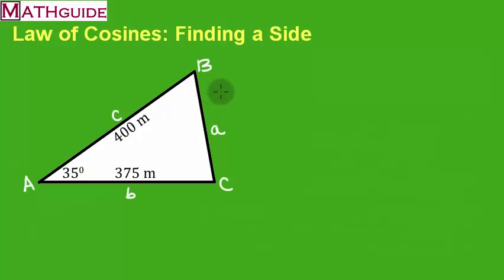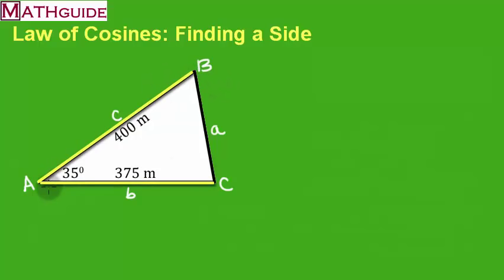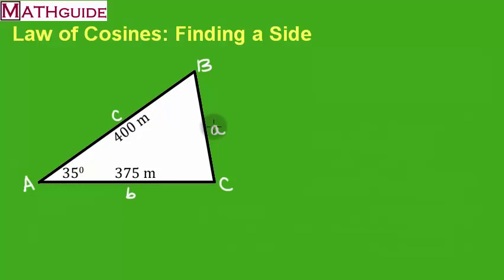The reason I know I can use the law of cosines is because I'm given two sides — I've got one side there, and the other side there — and I have the angle between them. That is the requirement for finding the side: give two sides and the angle between them, and we can use the formula.